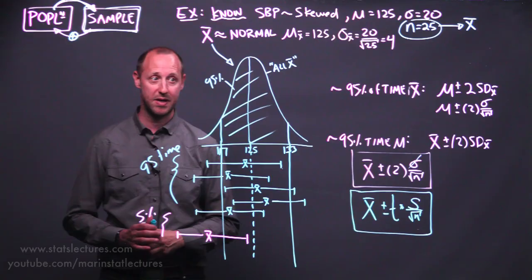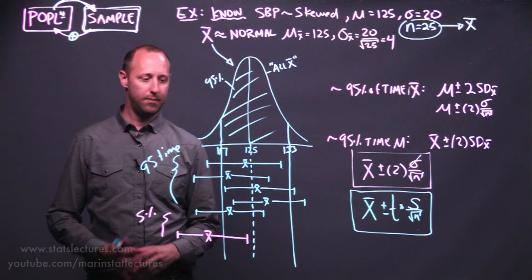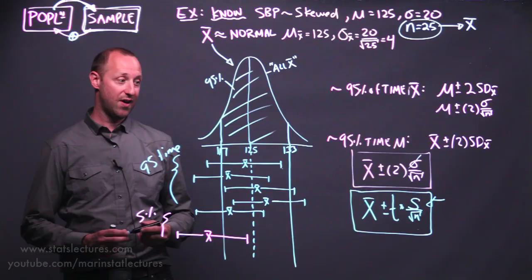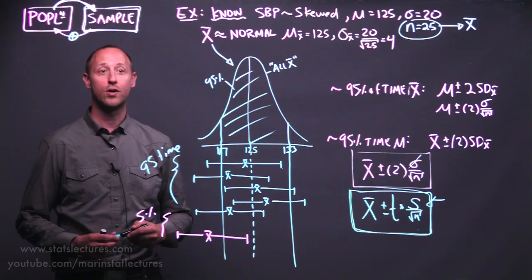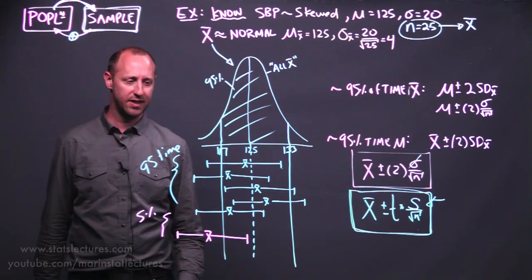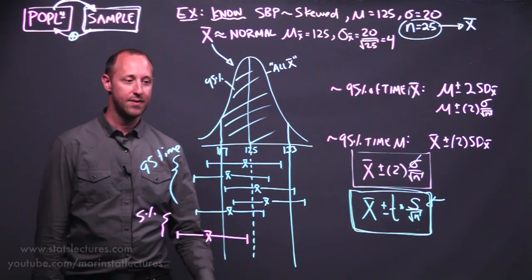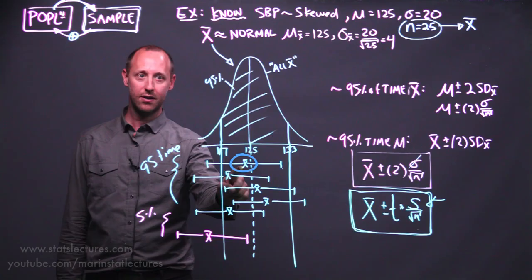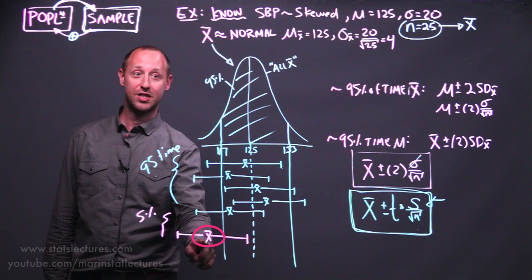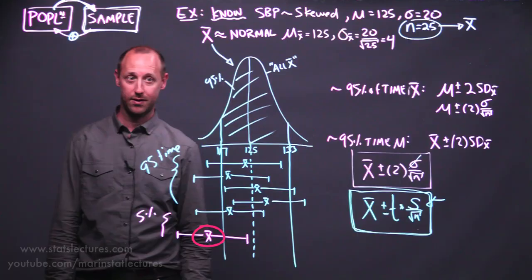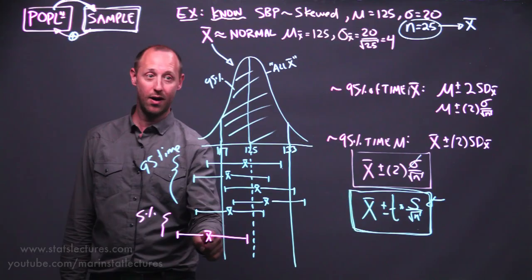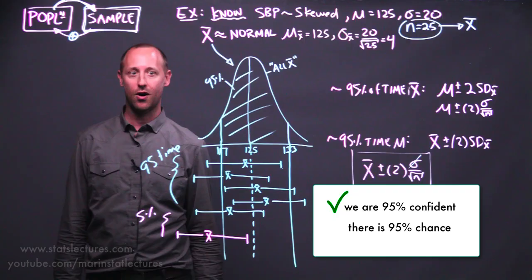One final thing we'll talk about in the next video: when we build these confidence intervals, we don't end up saying there's a 95% chance that the true population mean is contained in our interval. We're going to say we're 95% confident that it's in there. The reason is that in the real world, we end up with one sample of data. Looking at a sample whose interval does contain the true mean — it's not a 95% chance; it's 100%, it is in there. For a sample whose interval doesn't contain the true mean, the chance is zero. Since we don't actually know which sample mean and which interval we've got, that's why we say we're 95% confident our interval overlaps with the population mean, rather than saying there's a 95% probability.